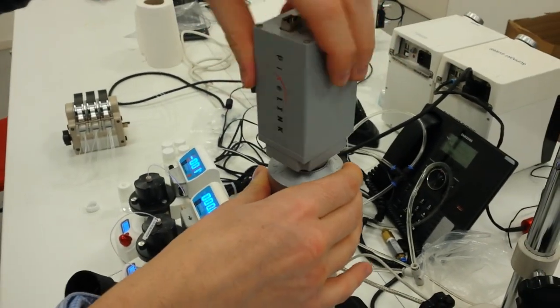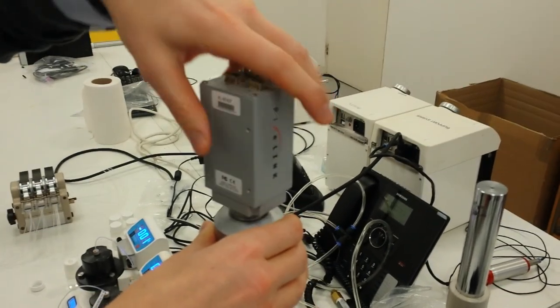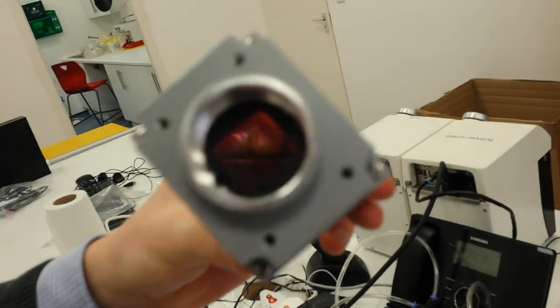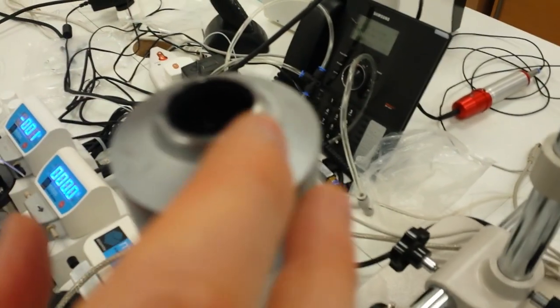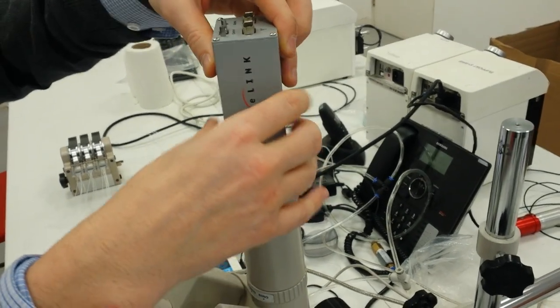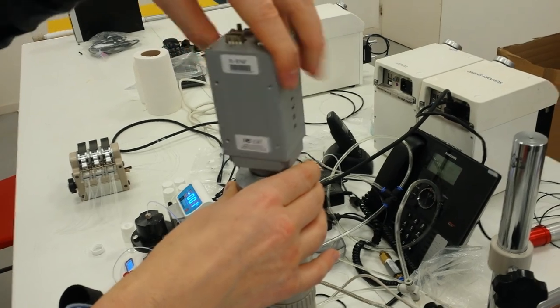This fitting I believe is a C-mount. As long as your microscope has this kind of thread—it's called a C-mount thread—and there's the male on the microscope itself, as long as your microscope has this C-mount, then we can screw it on.